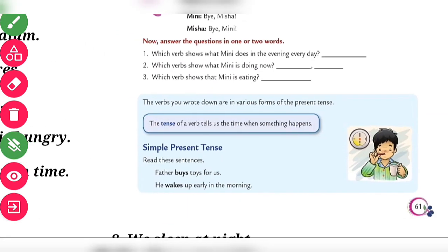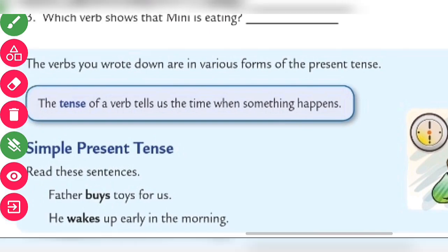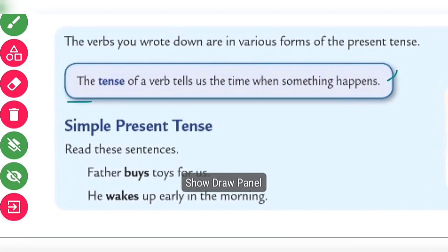Now the verbs you wrote down are in various forms of the present. The tense of the verb tells us the time when something happens.